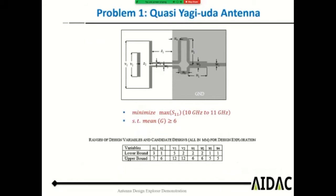The first problem is a quasi Yagi-Uda antenna. The optimization goal is to minimize the maximum return loss from 10 GHz to 11 GHz, subject to the main gain being greater than or equal to 6. The design parameters include S1 ranging from 3mm to 7mm, S2, V1, V2, U1, U2, U3, and U4. We want to find the best set of parameters within these search ranges to satisfy this performance goal using the Antenna Design Explorer.